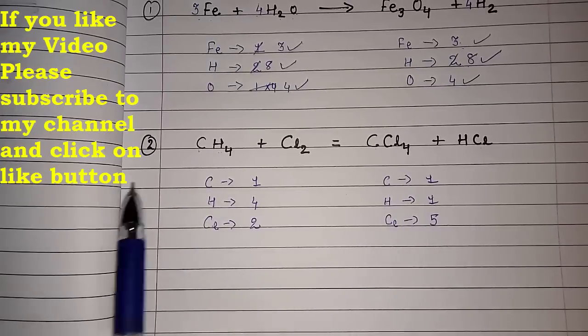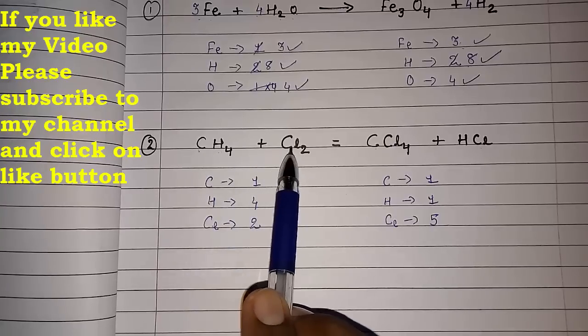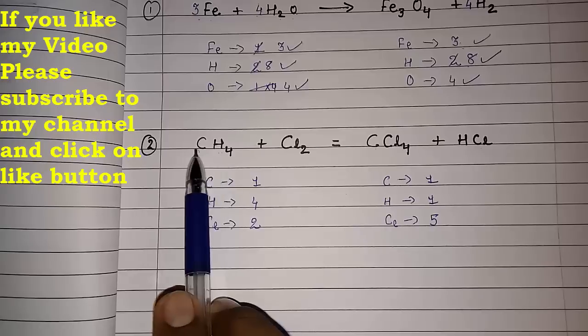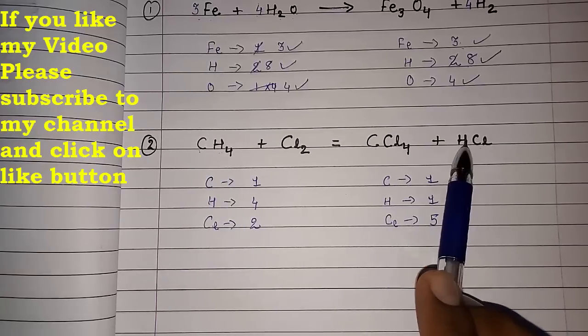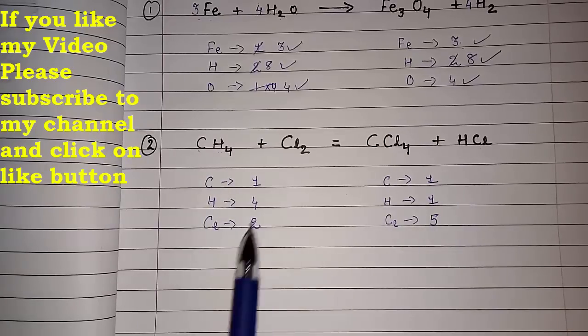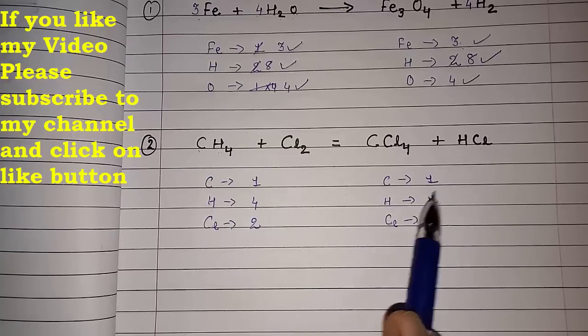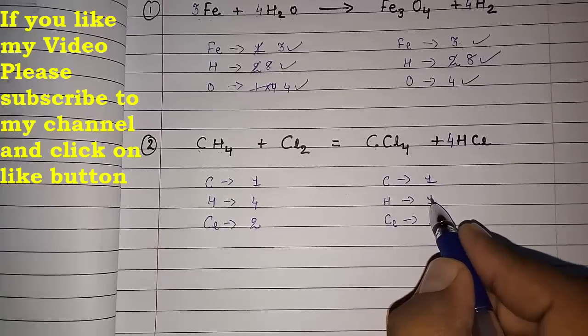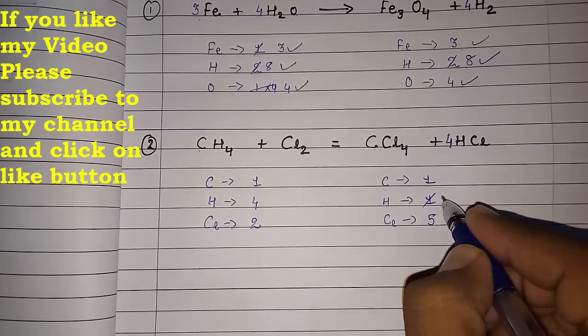So first which element we have to select. Look here. Chlorine here - H, means look here. H, this is also compound and this is also compound. So H is with two compounds. First we have to make this H equal. So I have to put four here. So this will become four H. So it will become four.